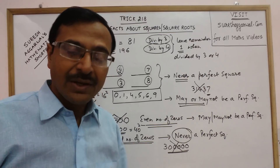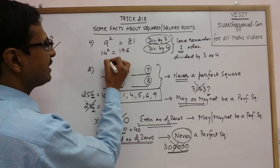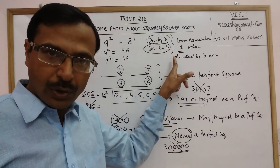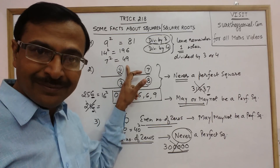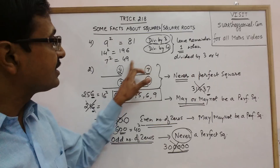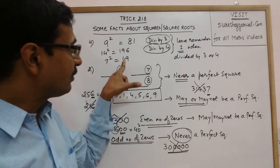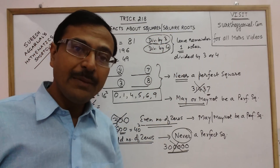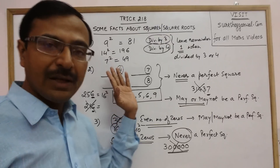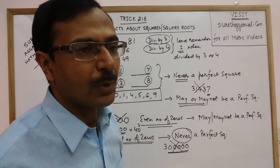Or there is a third condition: it leaves remainder 1 when divided by 3 or by 4. For example, 7 squared is 49. Now 49 is not divisible by 3 and not divisible by 4, but when you divide by 3 the remainder is 1 (since 48 is divisible by 3), and when you divide by 4, the quotient is 12 and the remainder is 1. So when dividing a perfect square by 3 or 4, the remainder can only be 0 or 1 — never 2.